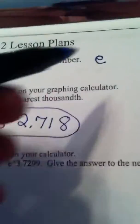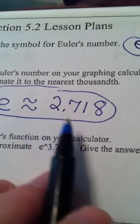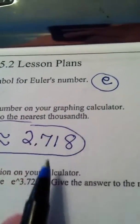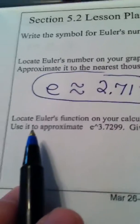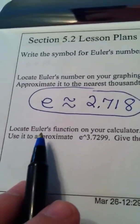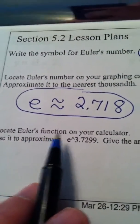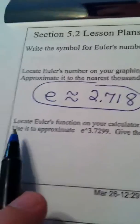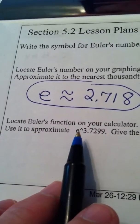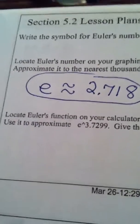Okay. e is Euler's number. It's approximately 2.718. We find it above the division key on the graphing calculator. And now the next thing they want us to do is to use Euler's function on the graphing calculator and approximate e raised to a power.